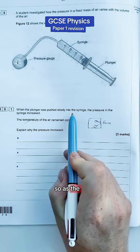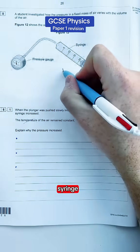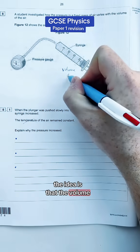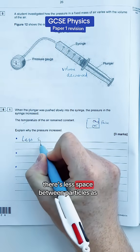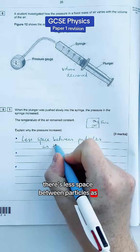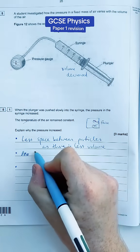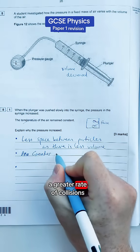So as the plunger gets plunged slowly into the syringe, the idea is that the volume is decreased. So as the volume is decreased, we say something like there's less space between particles as there is less volume, and that means there's going to be a greater rate of collisions.